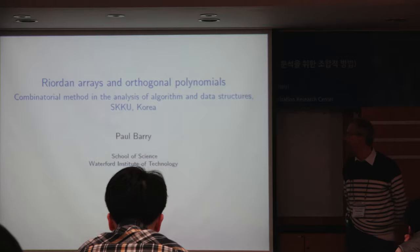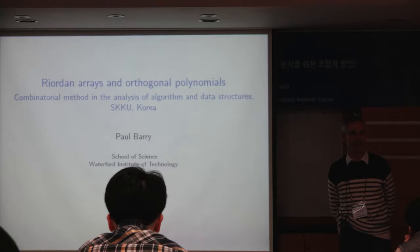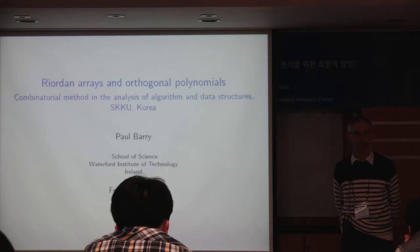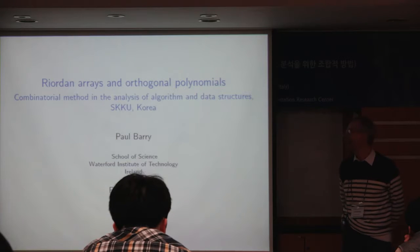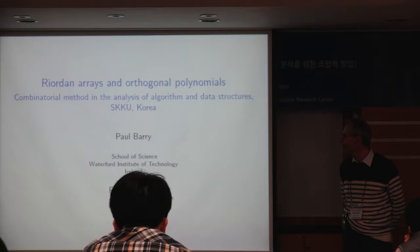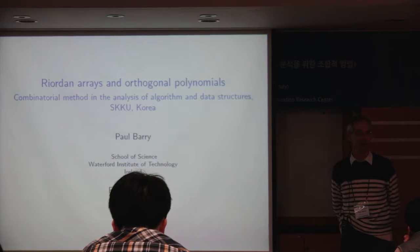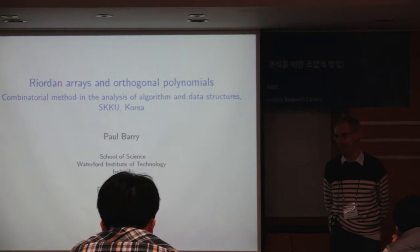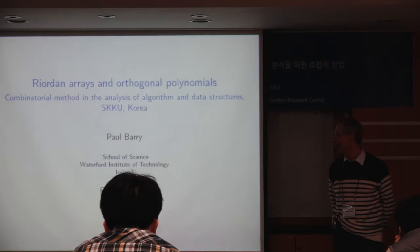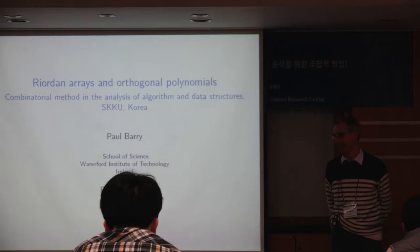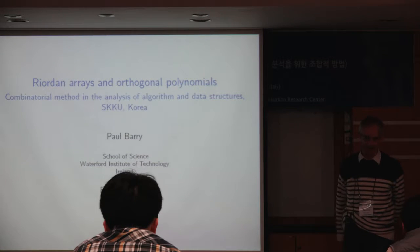I'm going to begin with a mistake which I'm going to correct immediately. The permutations that avoid 1, 2, 3, as we talked about this morning, are enumerated by the Catalan numbers. I think everybody knows that.